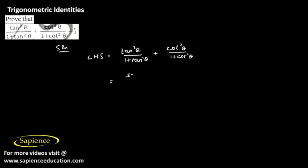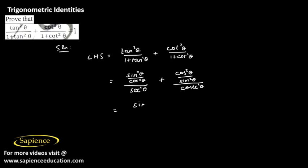Since 1 plus tan squared theta equals secant squared theta, and 1 plus cot squared theta equals cosecant squared theta, we substitute these. So we get tan squared theta divided by secant squared theta, plus cot squared theta divided by cosecant squared theta. This equals (sine squared theta divided by cos squared theta) into (cos squared theta), plus (cos squared theta divided by sine squared theta) into (sine squared theta).